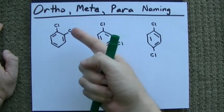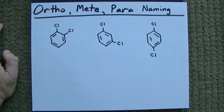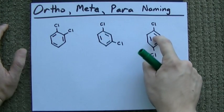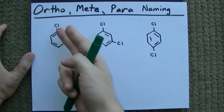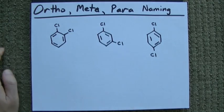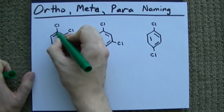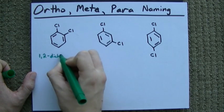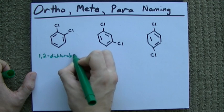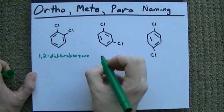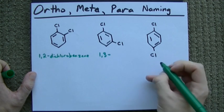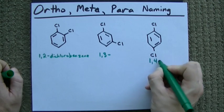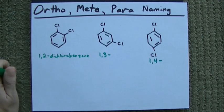The question, once we've called it benzene, is what's attached to it? In all these cases, it's two chloro substituents. This one here, if we call this carbon-1, would be 1,2-dichlorobenzene. This next one would be 1,3-dichlorobenzene, and this one would be 1,4-dichlorobenzene.